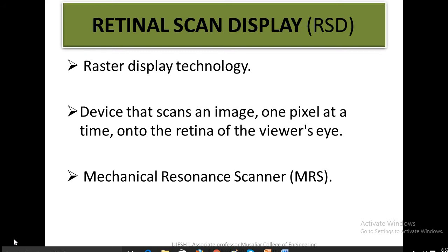You have been acquainted with raster scanning methods in television sets and CRT monitors, where an electron beam is swept across the screen one row at a time from top to bottom. The scanners used are mechanical resonance scanners, meaning the system responds at greater amplitude when the frequency of oscillation matches the system's natural frequency.